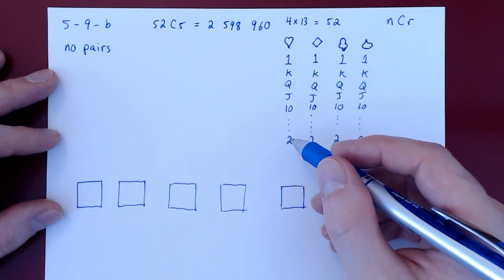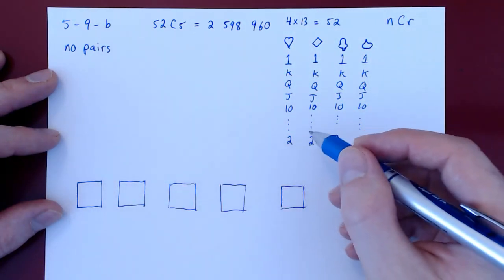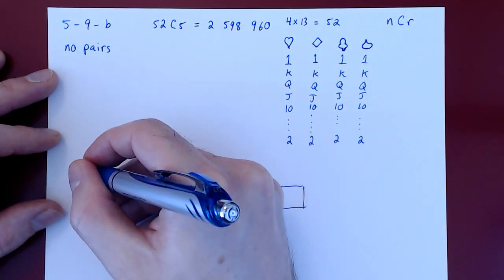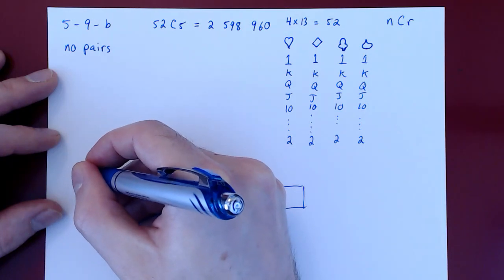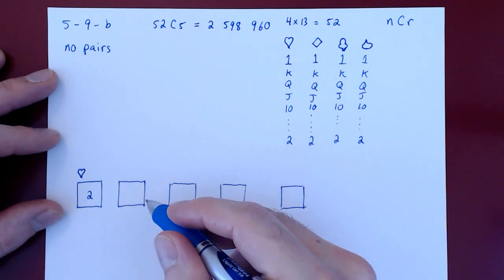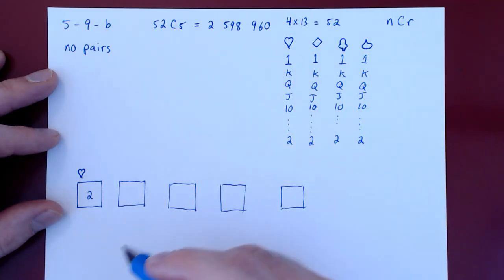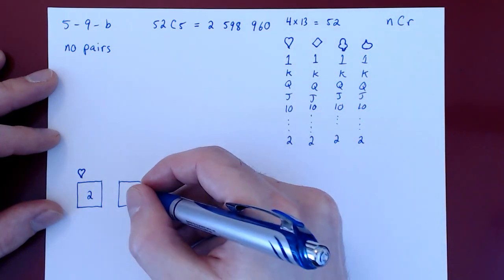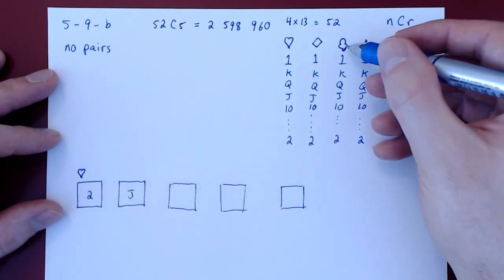So let's build such a hand. Say we take as the first card the two of hearts. Well, the next card can't be a two because that would give us a pair. So say we have a jack of clubs.